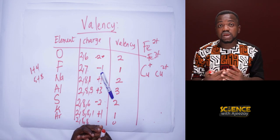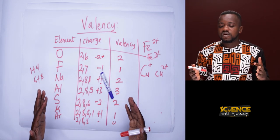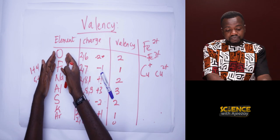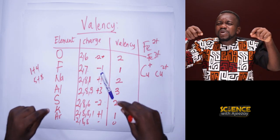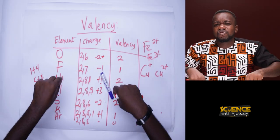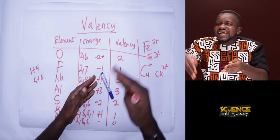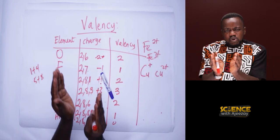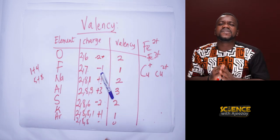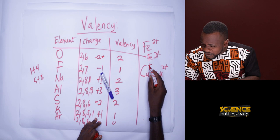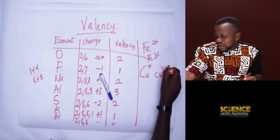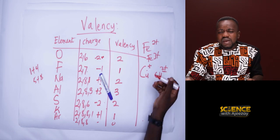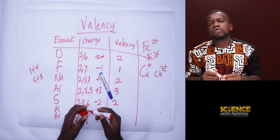With this, we can continue and look at radicals. We have studied that an ion is an atom that is electrically charged. But we can also have atoms coming together to form compounds with a charge — you can have a group of atoms together with a single charge. A single atom like sodium, chlorine, or copper that carries a charge is an ion. But when a group of atoms carries a charge together, we call them radicals.